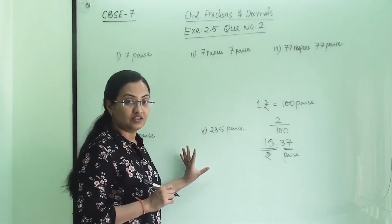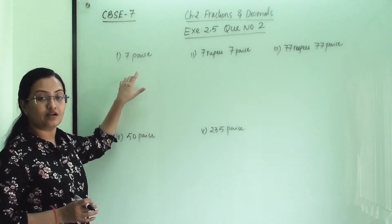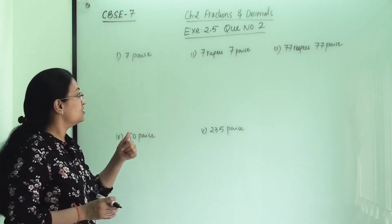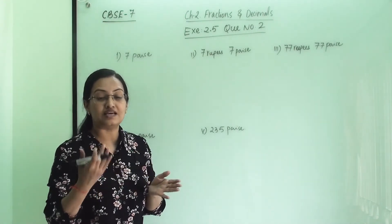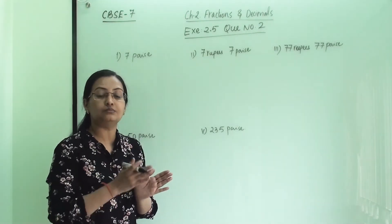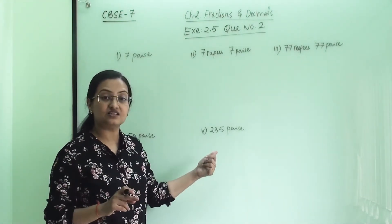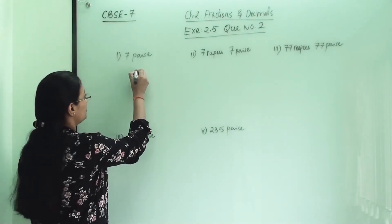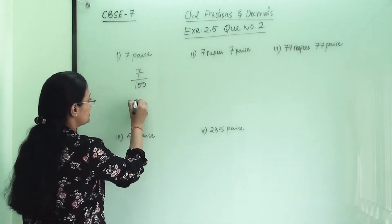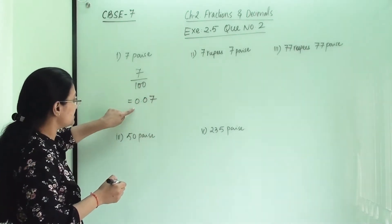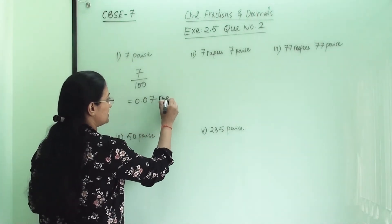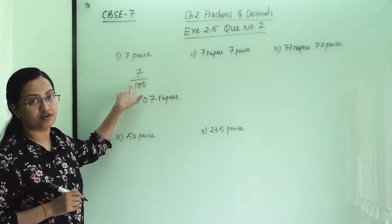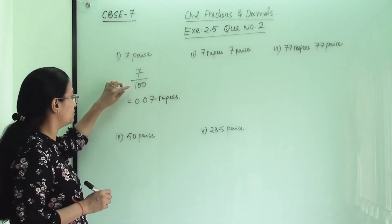Let us solve all these numbers. The first is 7 paise. When we convert this paise into decimal we are actually converting it into rupees. So we write 7 with denominator 100, which gives us 0.07. This paise is converted into rupees, and we always divide by 100 because 1 rupee equals 100 paise.